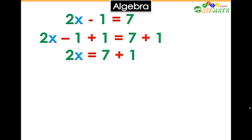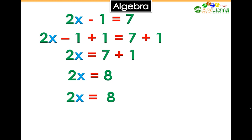2x equals 7 plus 1, or 2x equals 8. Now let's divide each side by 2: 2x divided by 2, and 8 divided by 2.